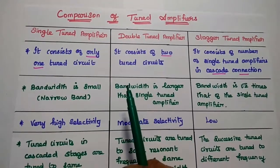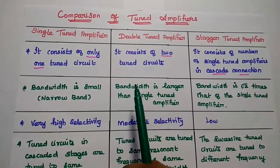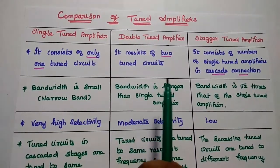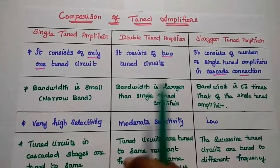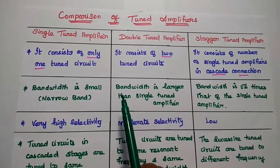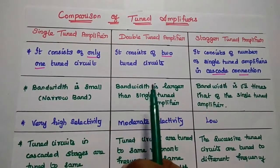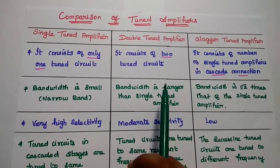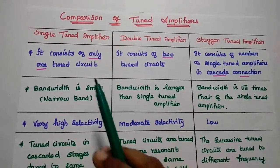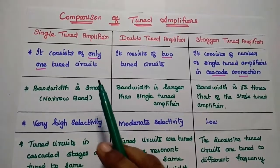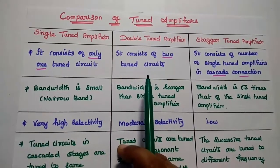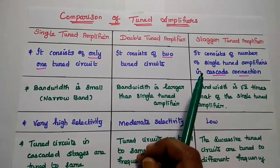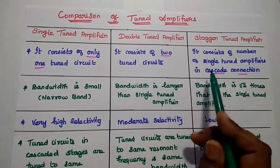Dear students, now we are going to discuss comparison of tuned amplifiers. Small signal tuned amplifiers are classified into three types: single tuned amplifier, double tuned amplifier, and stagger tuned amplifier.